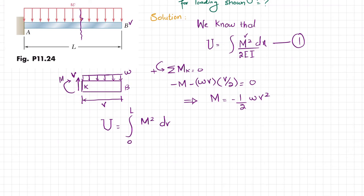Substituting the value: U equals the integral from 0 to L of (minus one-half W V squared) squared divided by 2EI dV.